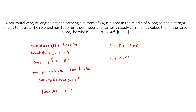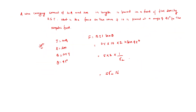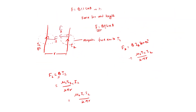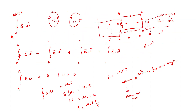Note that n (small n) is turns per unit length, which equals capital N divided by small l. This is the number of turns per meter used in the solenoid formula.